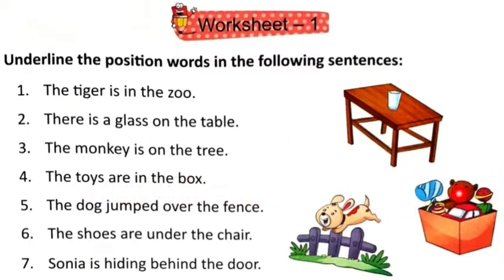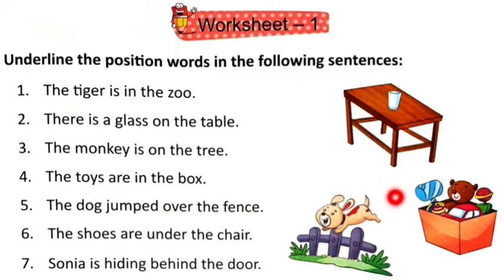Toys box ke andar hai. Position word ko dhundna hai aur use underline karna hai. Number 5: The dog jumped over the fence. Yeh dog jump kar raha hai over the fence, toh yahaan par position word ko dhundh kar aapko use underline karna hai. Number 6: The shoes are under the chair. And the last one is: Sonia is hiding behind the door. Darwaze ke peeche chupi hui hai, toh aapne position word dhundh kar use underline karna hai.